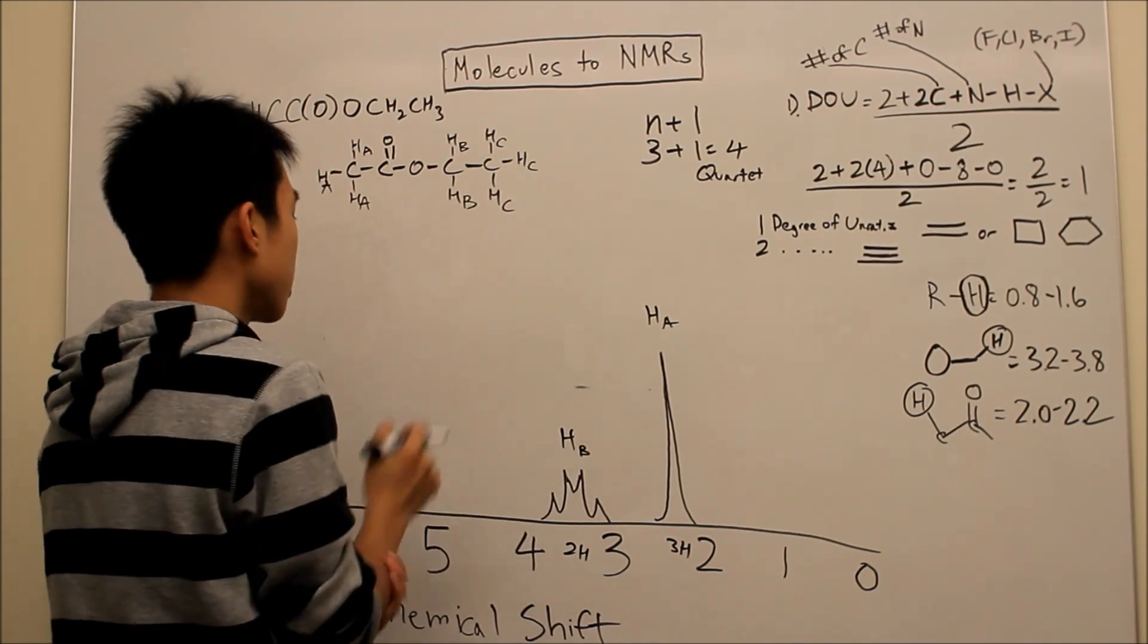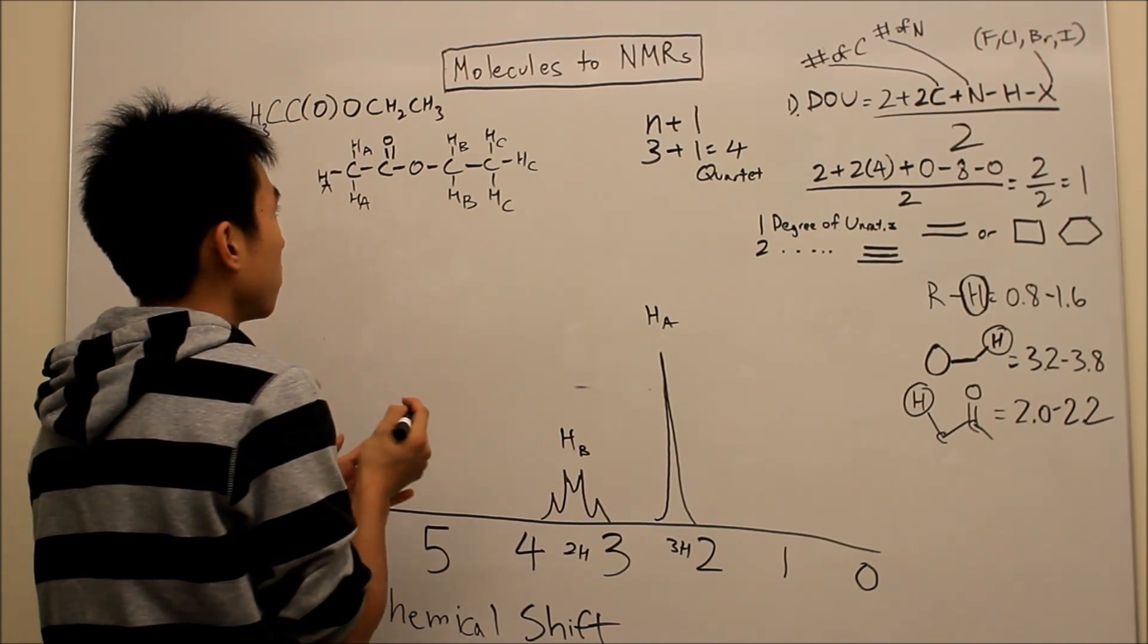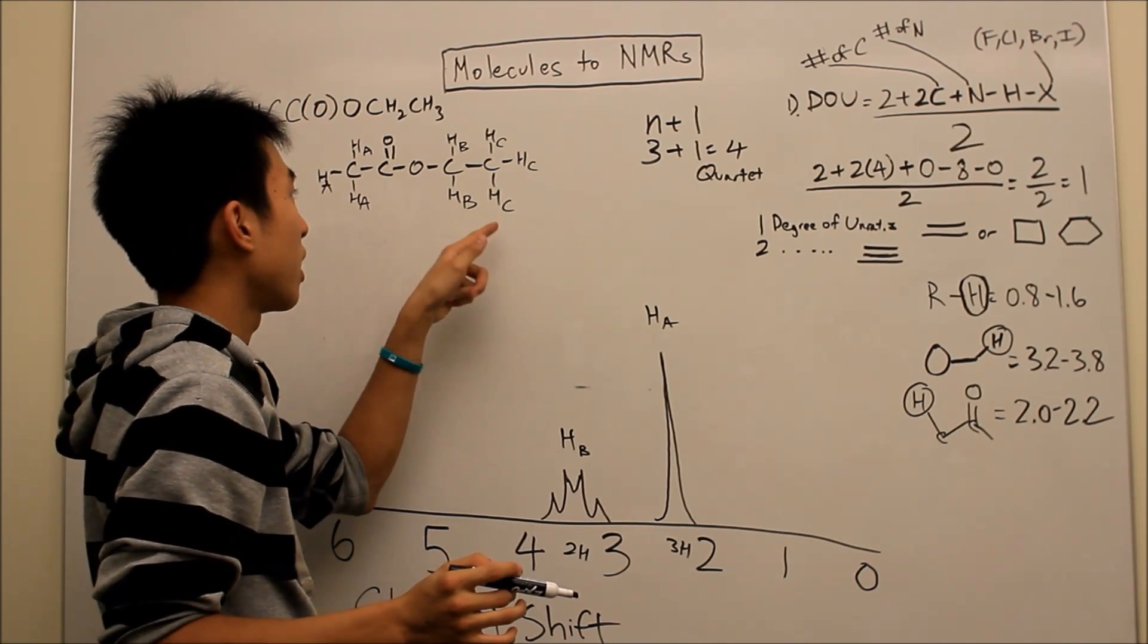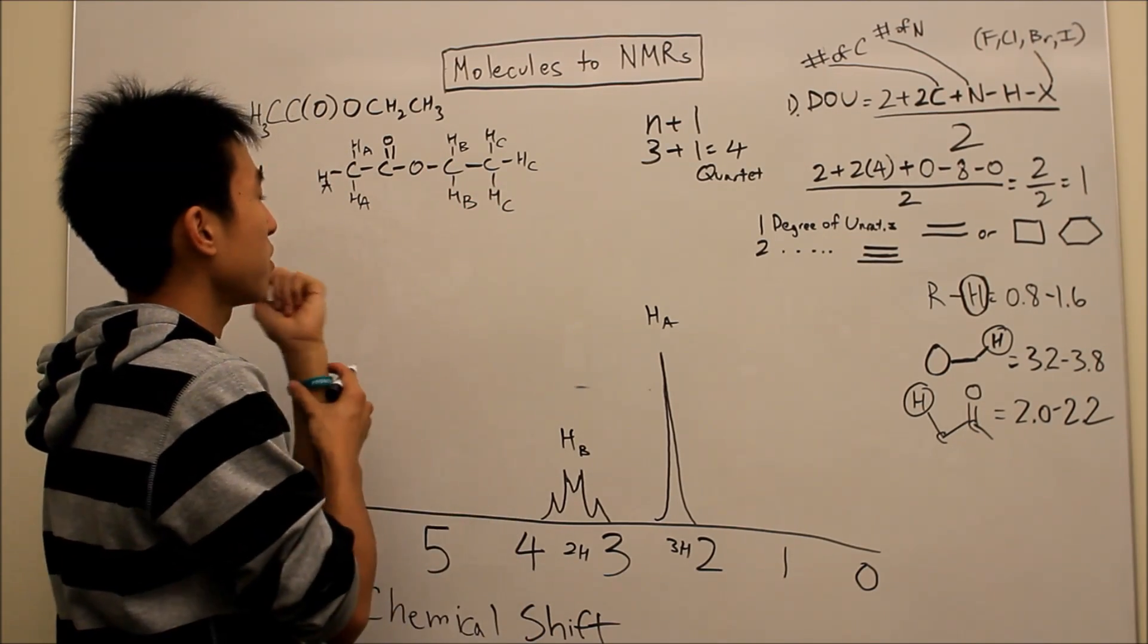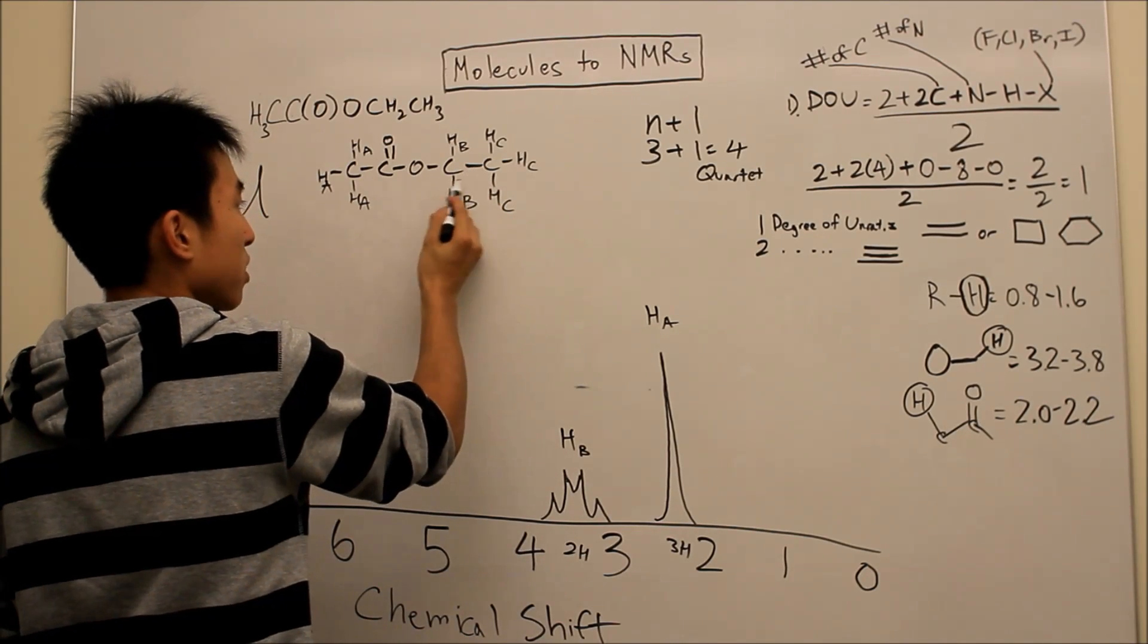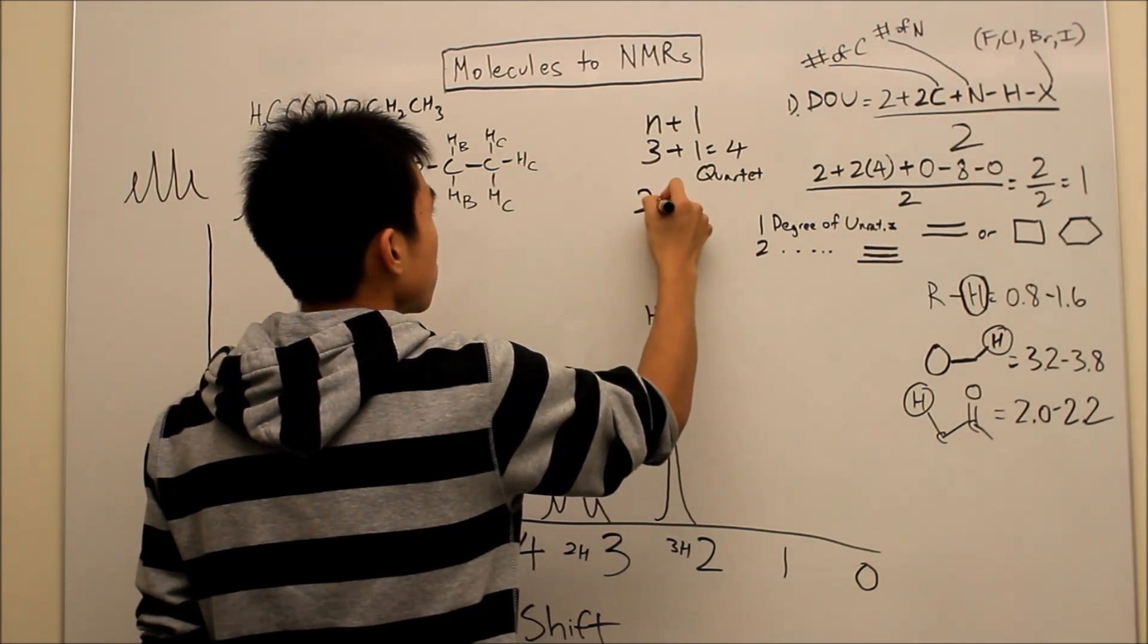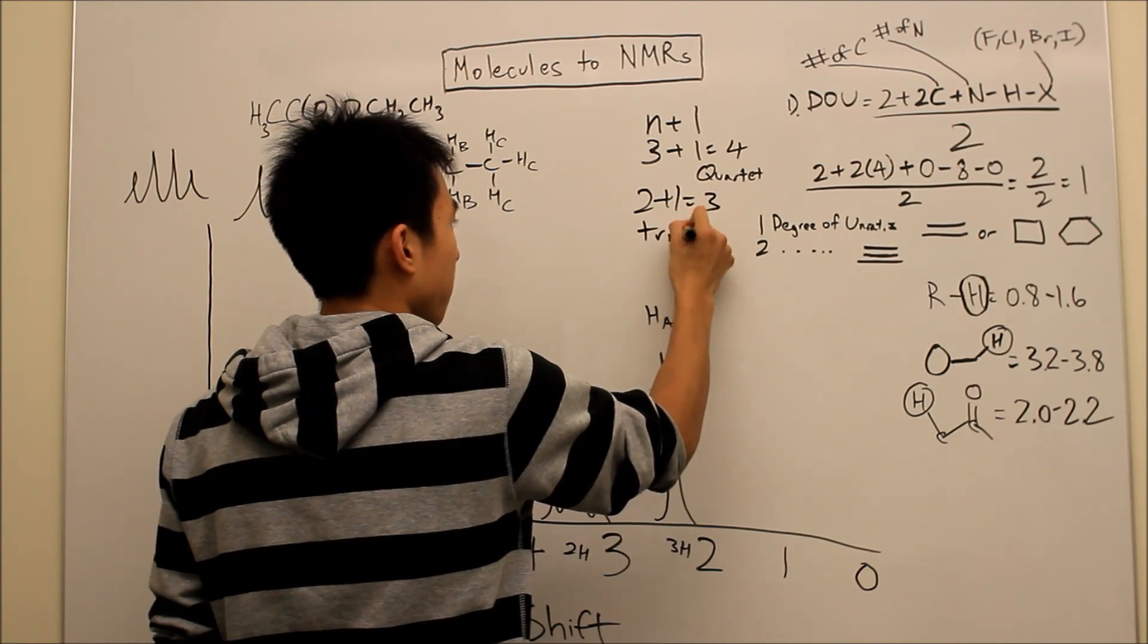And the last one, HC. Is it split by anything? Okay. It's being split by HB. Because if HB was split by HC, then that means that HC must be also split by HB itself. And you can double check it with the distance thing. So one bond, two bonds, three bonds. One bond, two bonds, three bonds. And they're all equivalent. So let's use our n plus one rule again. So that's two plus one. That's equal to three. It's going to be our triplet now.